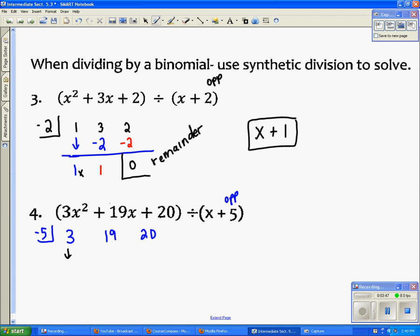Process says drop the first. Multiply. Negative 5 times 3 is negative 15. Now we add down. 19 minus 15 is 4. Multiply. Negative 5 times 4 is negative 20. And then we add down, and this is our remainder, which these have remainders of 0. So then if this is an x squared term, we go 1 degree less, so it's just an x. So we get 3x plus 4 when we divide that.